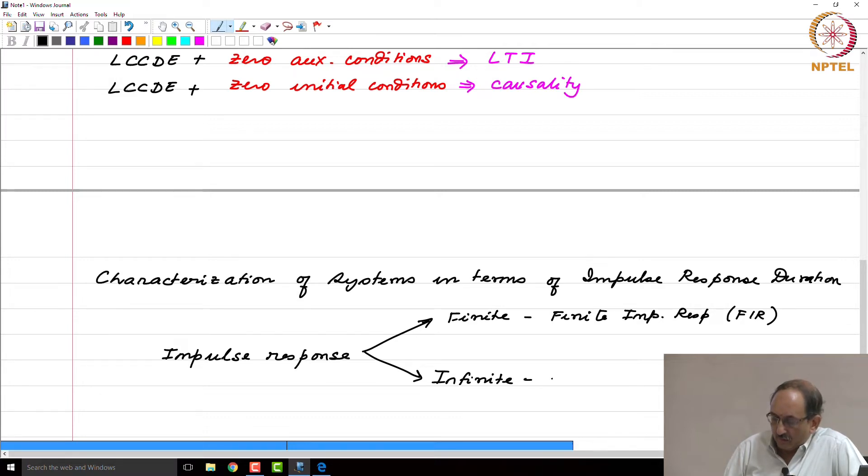If the impulse response is infinite, just paralleling what was given earlier, this is denoted as infinite impulse response and abbreviated as IIR. As far as discrete time systems are concerned, among the class that we are interested in, FIR and IIR systems are an important sub classification.